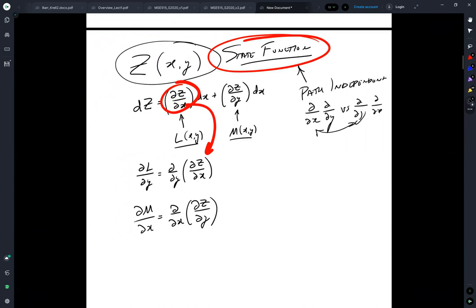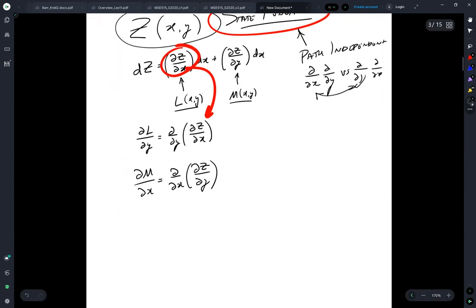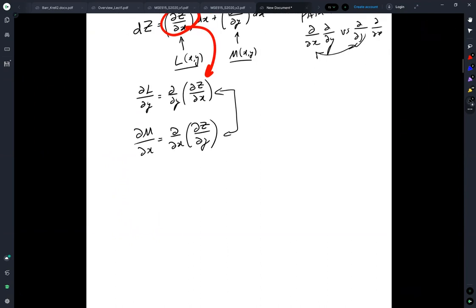And that satisfies what's called the Schwartz theorem. And the Schwartz theorem says that a function which has continuous second partial derivatives can be set equal.